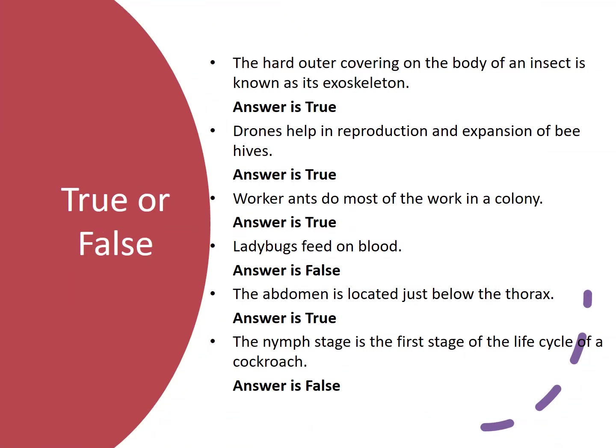The hard outer covering on the body of an insect is known as its exoskeleton — true. Drones help in reproduction and expansion of beehives — true. Worker ants do most of the work in a colony — true.